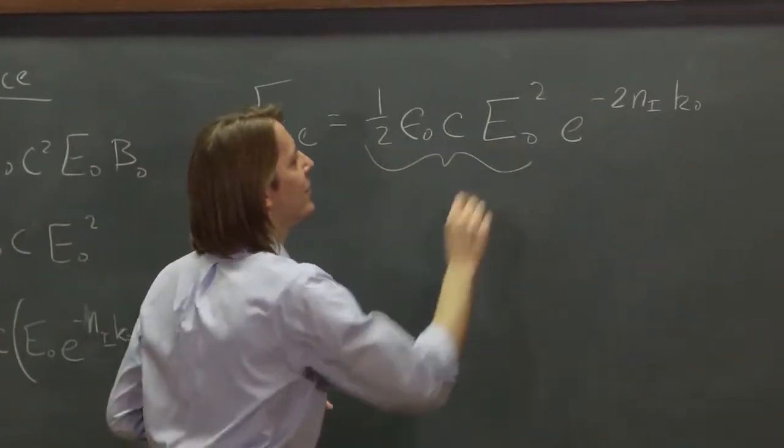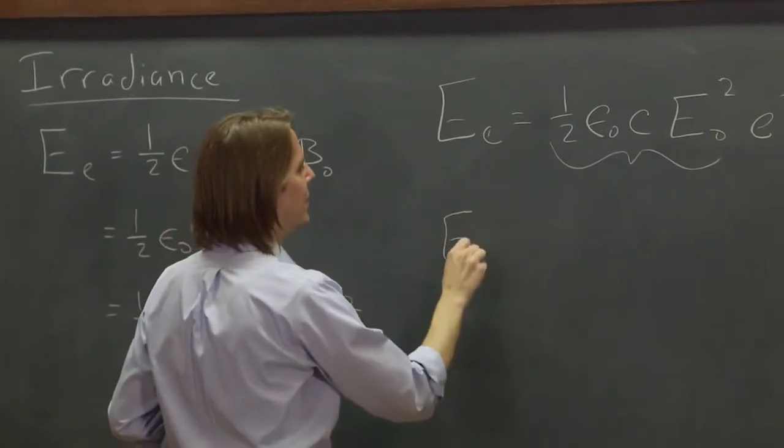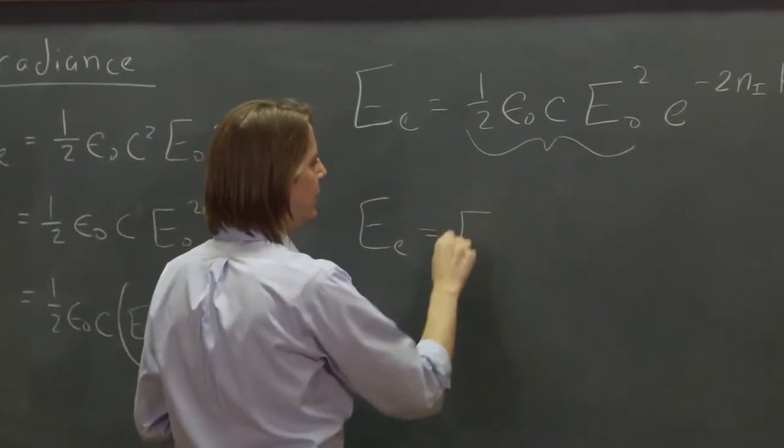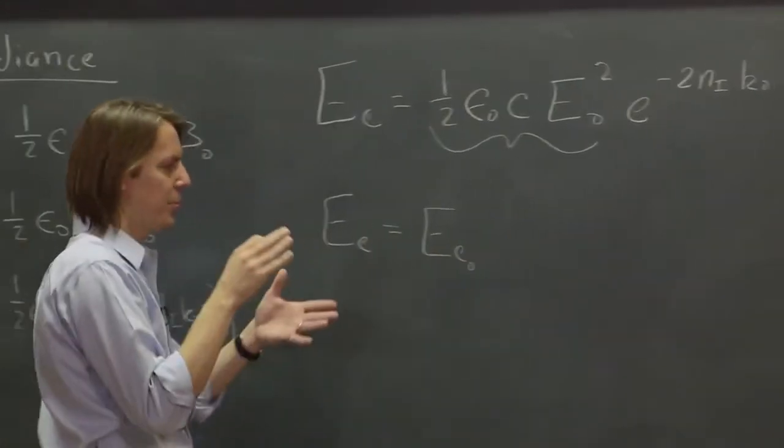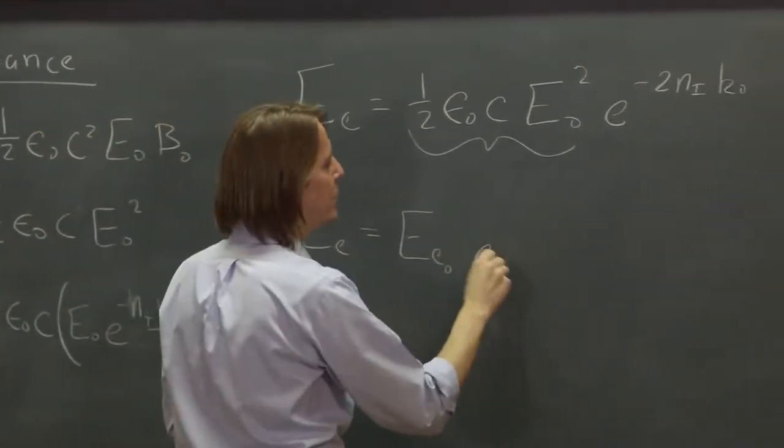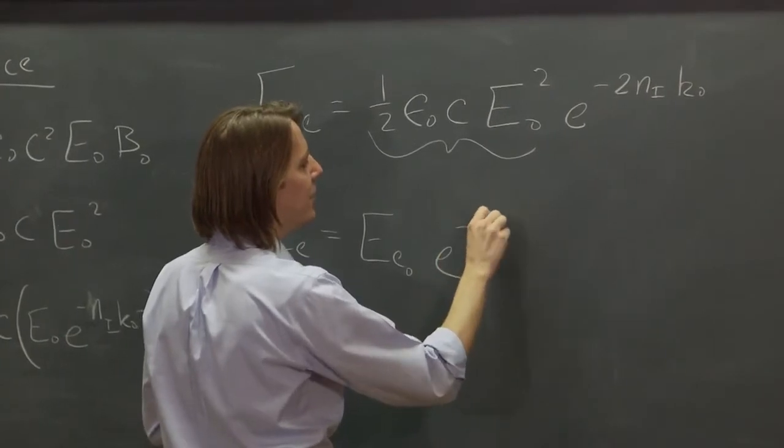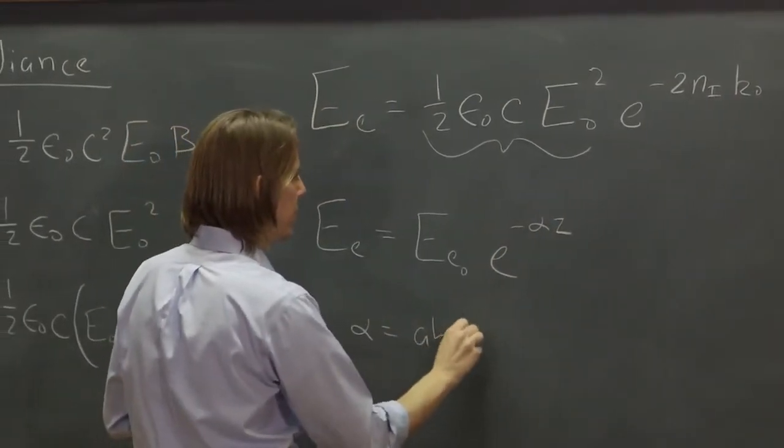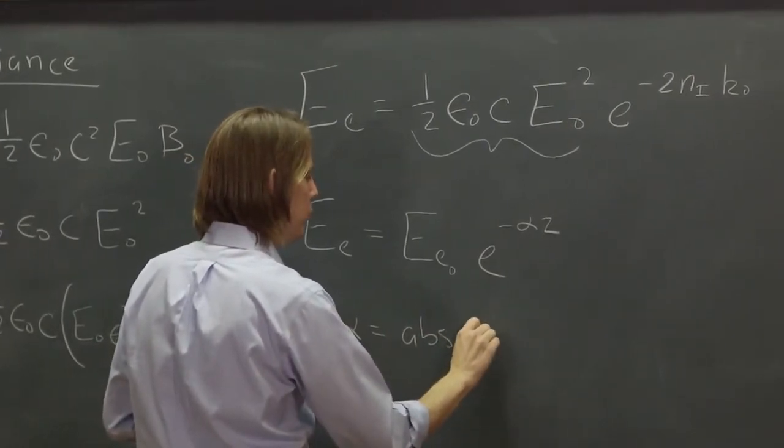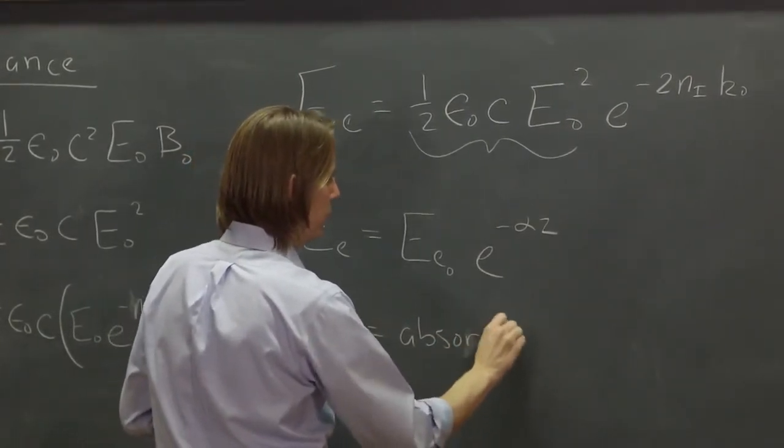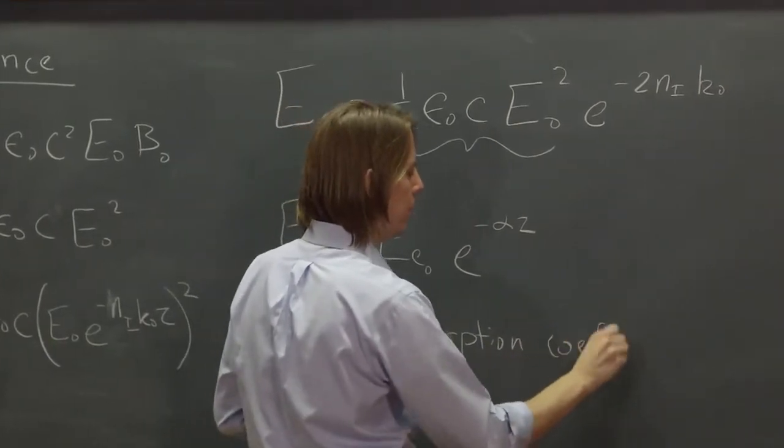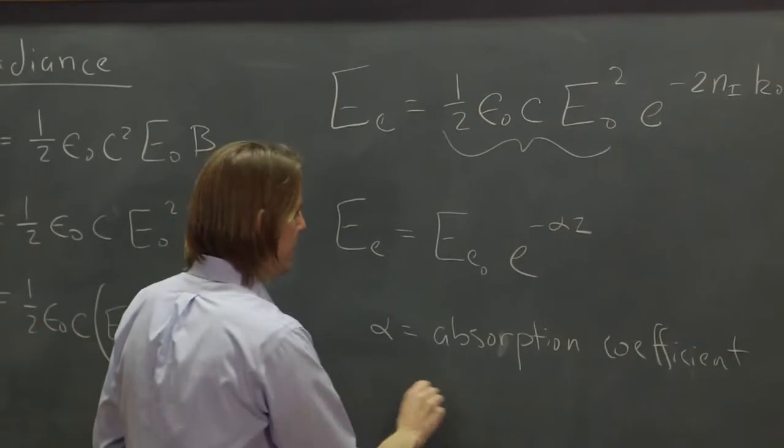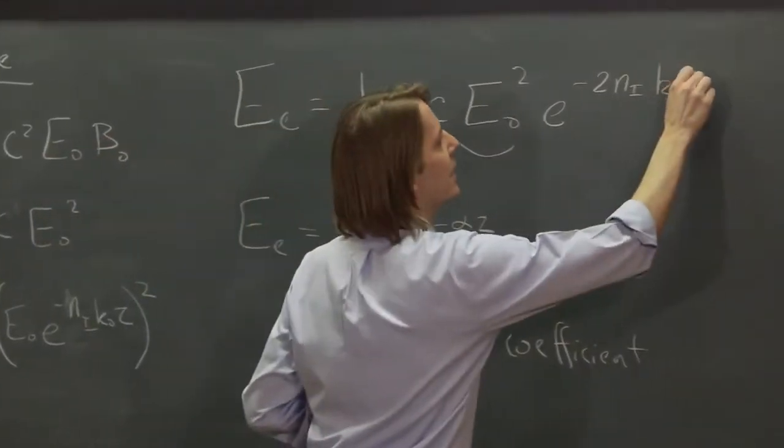And now, if you recognize this as sort of the incident irradiance, then you can say the E_c, the irradiance as a function of position, is E_c-naught, how much irradiance enters the dielectric medium, and then usually e to the minus alpha z, where alpha is the absorption coefficient.